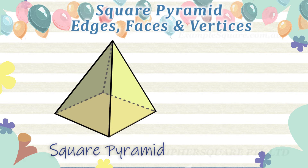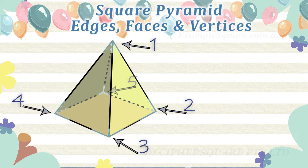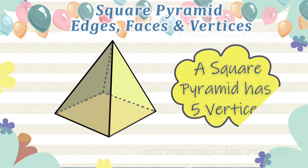How many vertices does a square pyramid have? One, two, three, four, five. A square pyramid has five vertices.